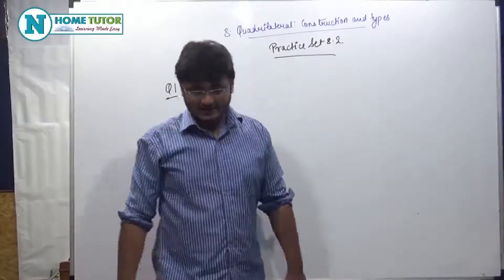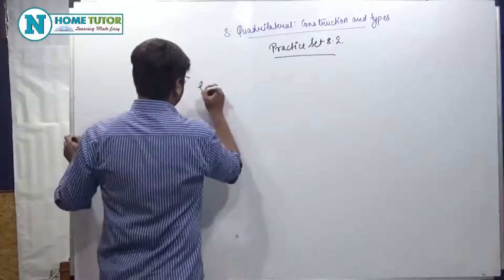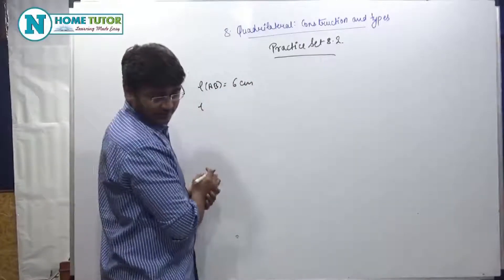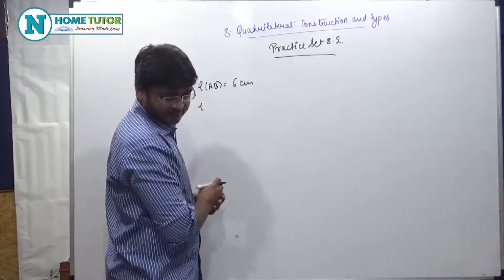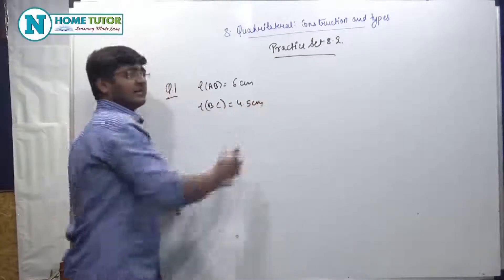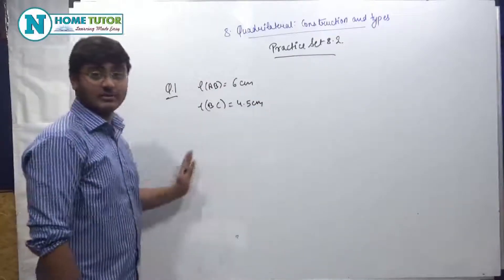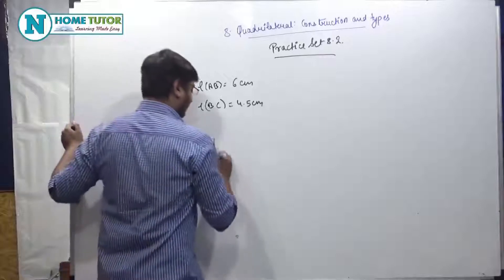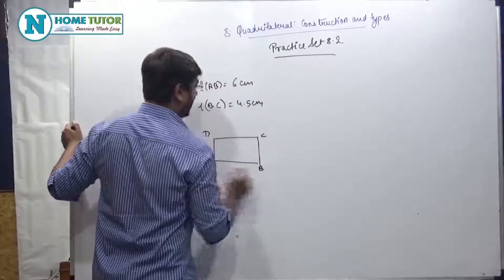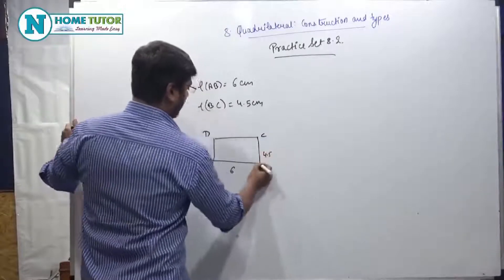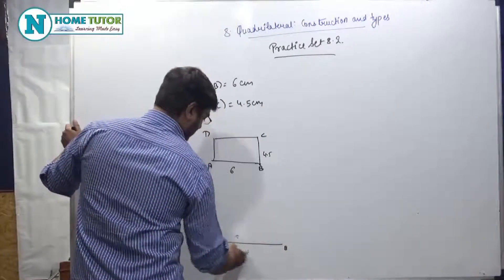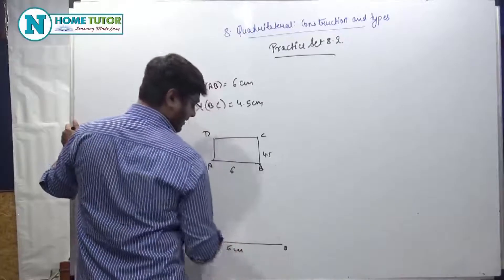पहला question है: draw a rectangle ABCD such that length of AB = 6 cm and length of BC = 4.5 cm. मुझको सिर्फ एक rectangle draw करना है जिसकी दो sides मुझको पता हैं — बाकी दो opposite sides obviously same होने वाली हैं. Rough figure: A, B, C, D — AB = 6, BC = 4.5. Actual figure: A और B draw करें, AB = 6 cm का line segment.